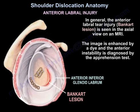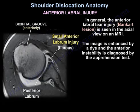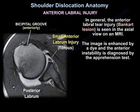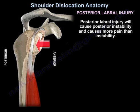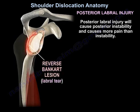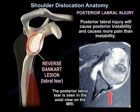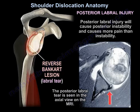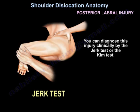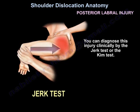In general, anterior labral tear injury is best seen on the axial view on an MRI, enhanced with dye, and anterior instability is diagnosed by the apprehension test. The biceps groove is anteriorly. Posterior labral injury will cause posterior instability and causes more pain than instability. The posterior labral tear is seen in the axial view on MRI. You can diagnose this injury clinically by the jerk test or the Kim test.